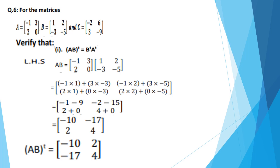Now take the transpose. For transpose, as told before, change rows into columns. This one is the first row — change into column: minus 10. Now second row, change into column: 2, 4. So (AB) transpose gives the result with rows and columns interchanged.